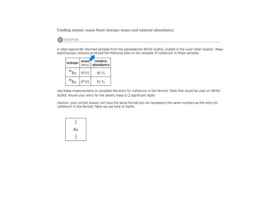So what this analysis told us is that the ruthenium that was in that sample taken from that planet had two isotopes present.